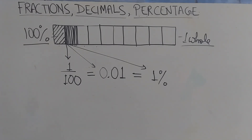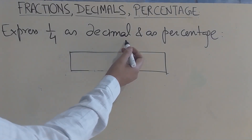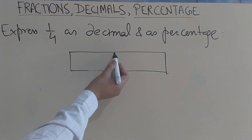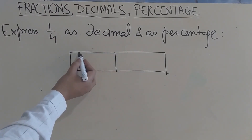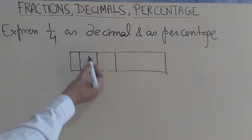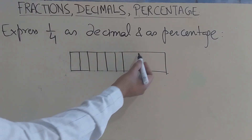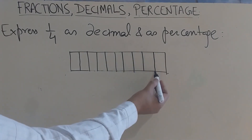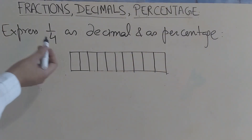Whenever there is a decimal involved, it is always convenient to divide your model into 10 equal parts, because decimal has this inbuilt decadal structure.